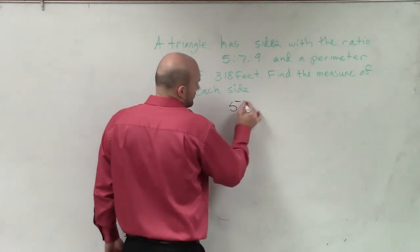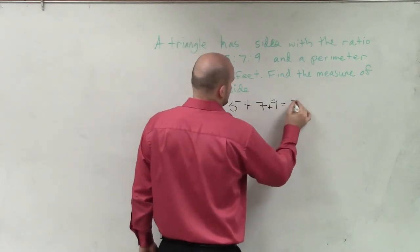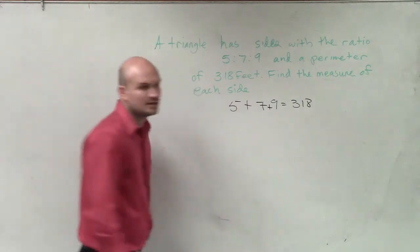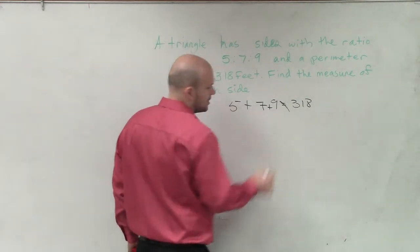So you would say, alright, well, 5, 7, and 9 equals 318. And does that work? No, right? That doesn't work. Not going to go.